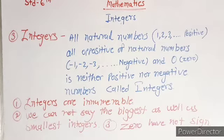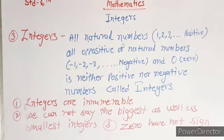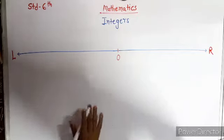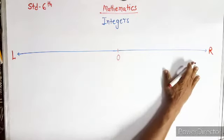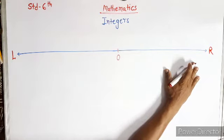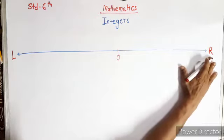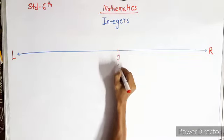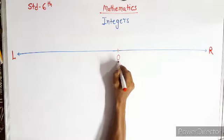Integers are innumerable. We cannot say the biggest as well as the smallest integer. Zero is in the group of integers; however, zero has no sign — it is neither positive nor negative. Now we draw the number line. Zero is the origin point. To the right side and to the left side. One unit distance to the right of zero is 1. Two unit distance from zero is 2. Three unit distance is 3. Four unit distance is 4.